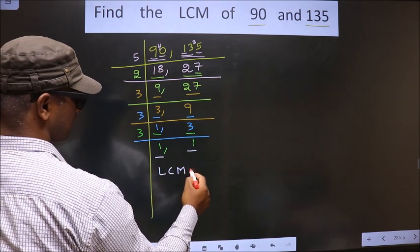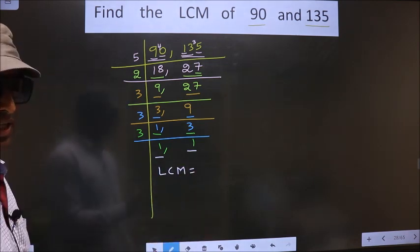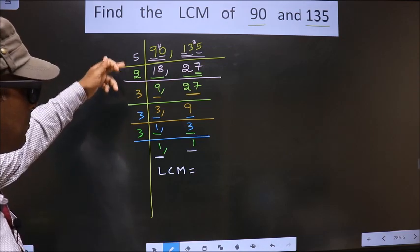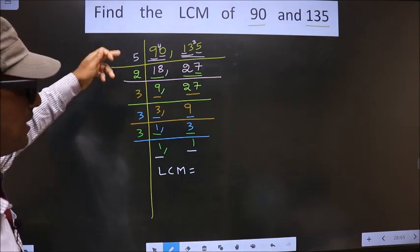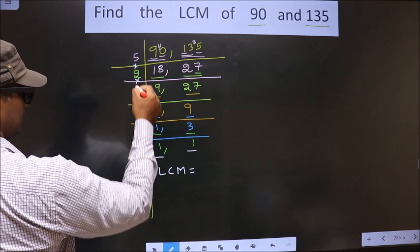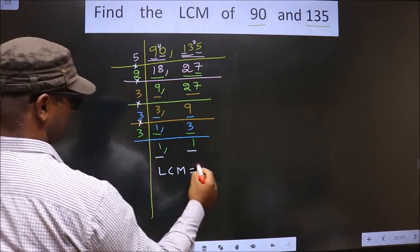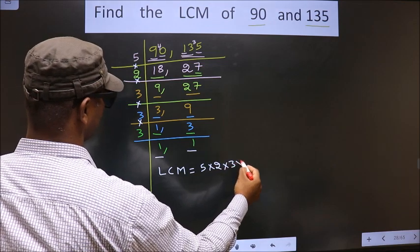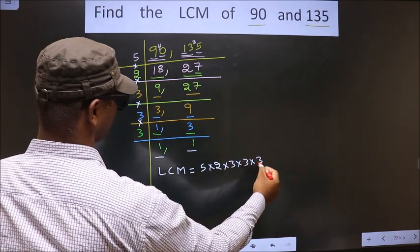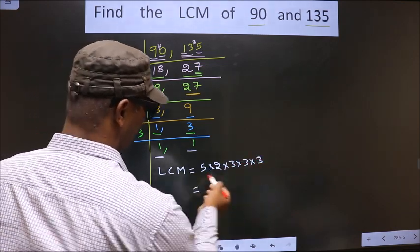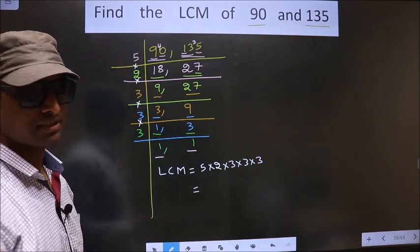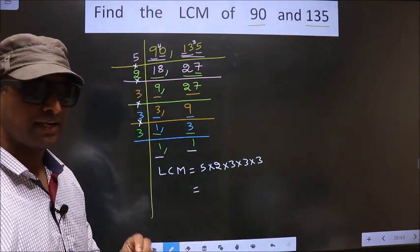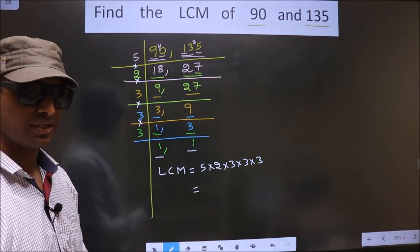So now our LCM is the product of these numbers. That is 5 into 2 into 3 into 3 into 3. You multiply all these numbers. Whatever number you get, that is your LCM.